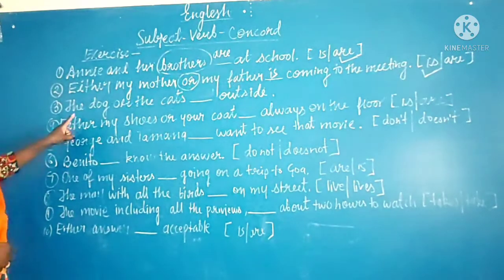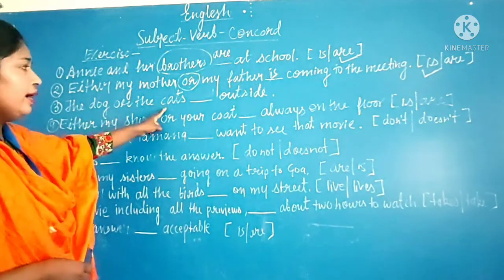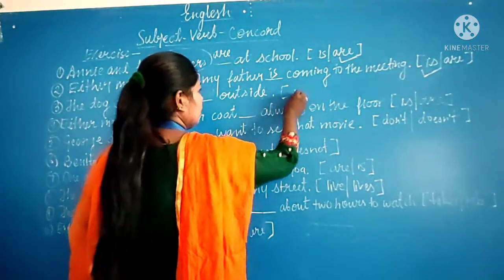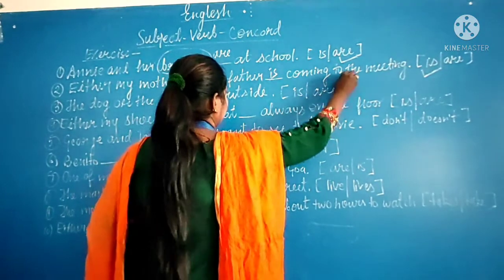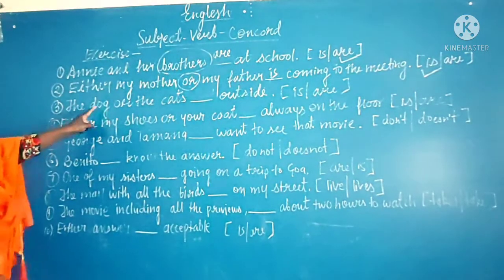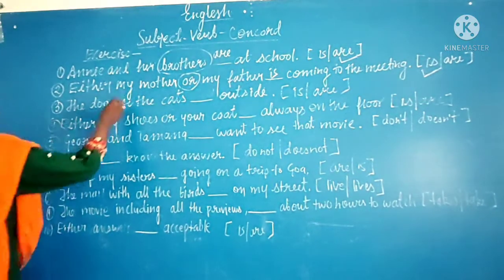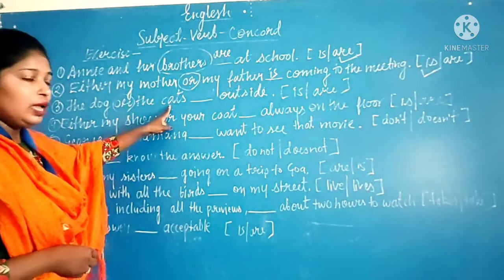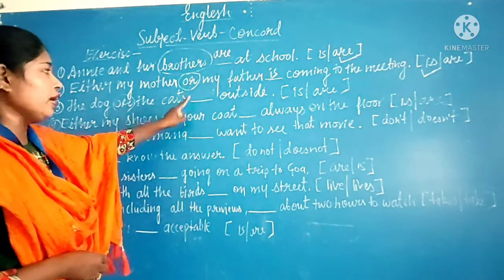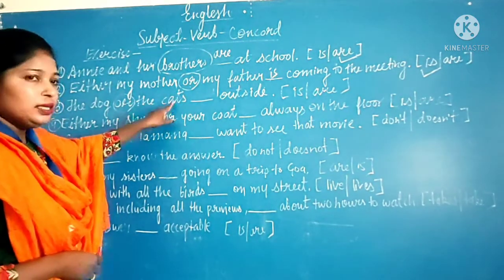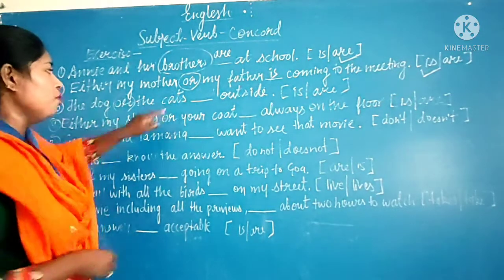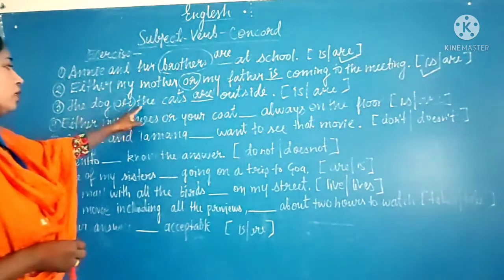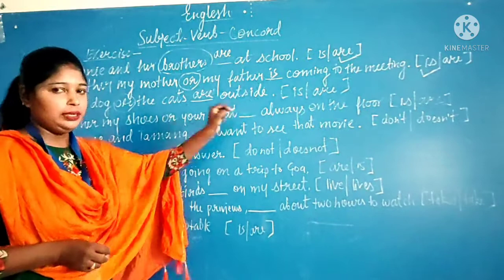The next sentence is: 'The dog or the cats ___ outside.' The options are 'is' and 'are.' Here 'or' is used, and the second subject — the nearest noun — is 'cats,' which is plural. So 'are' is correct. The dog or the cats are outside.